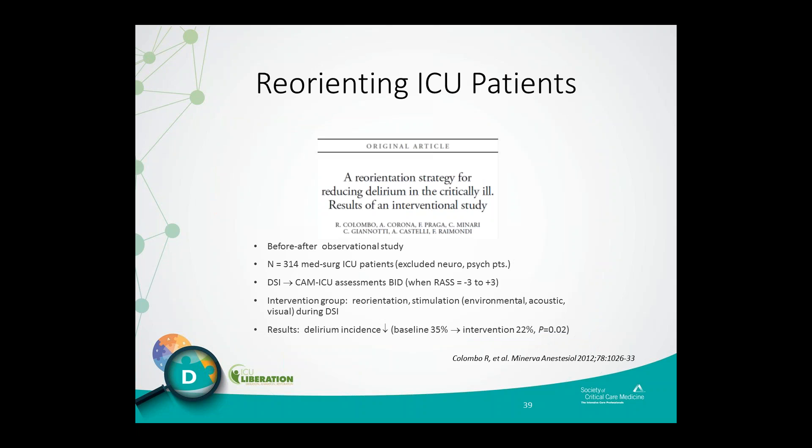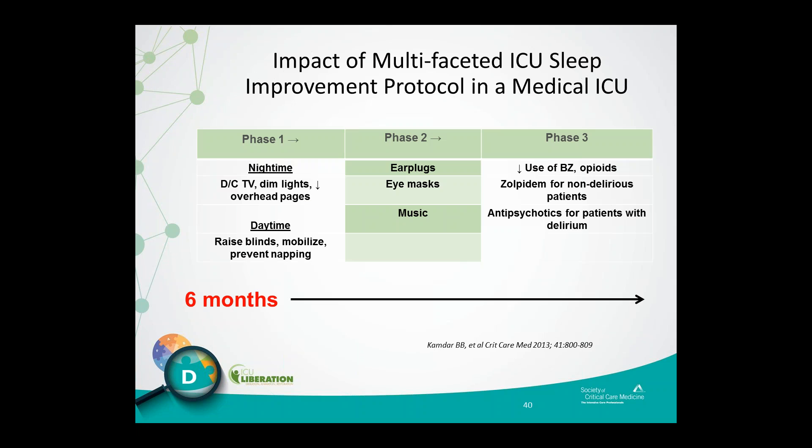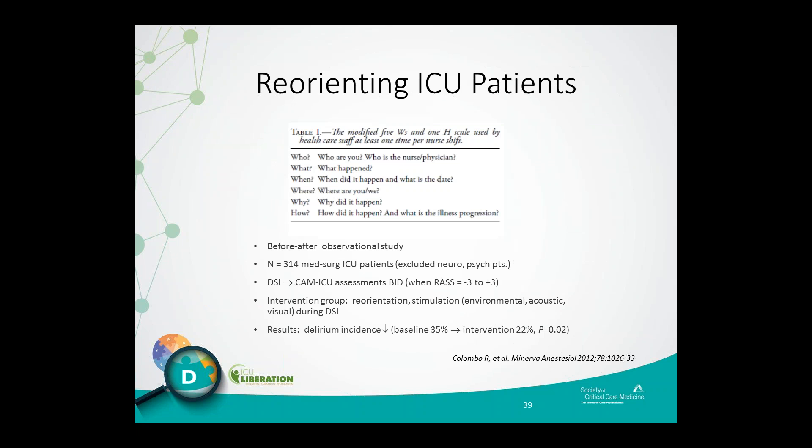Colombo and colleagues conducted an observational study looking at reorienting ICU patients. The intervention group underwent a reorientation strategy using something called the 5Ws and 1H scale — helping patients understand how long they'd been in the ICU, where they are, who their nurse is, what happened, when, where, and why. This simple but eloquent approach was able to reduce the incidence of delirium significantly — from 35% down to 22%. This highlights the importance of taking an individualized approach with patients.